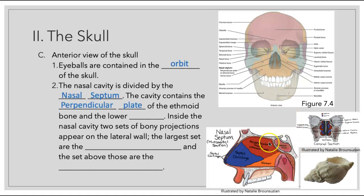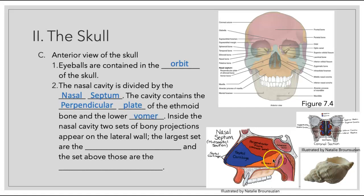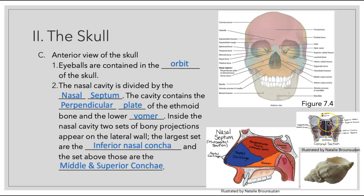The first part of the nasal septum is going to be the perpendicular plate. Looking at a sagittal slice down the skull, at the superior aspect we can see the perpendicular plate of the ethmoid bone, and the lower area contains the vomer. We also have two sets of bony projections on the lateral wall called concha. The largest set is the inferior nasal concha, and the set above it will be called the middle and superior nasal concha.